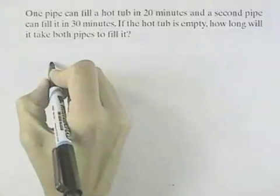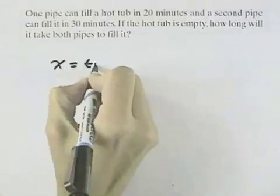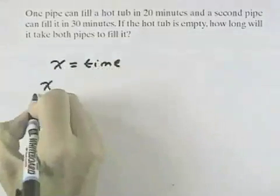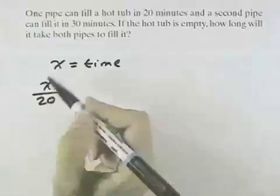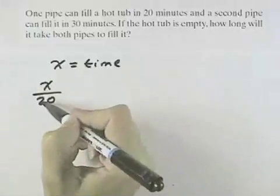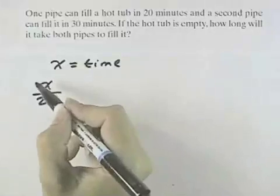Let's call X the amount of time that it takes to fill the hot tub. If the first one's working alone, X over 20 would mean when X is 20, the hot tub's full. So that would represent the amount of time for the first pipe.